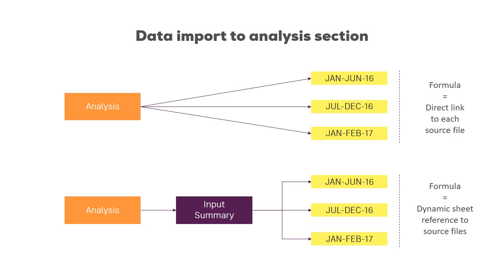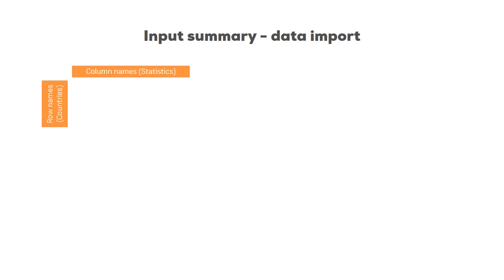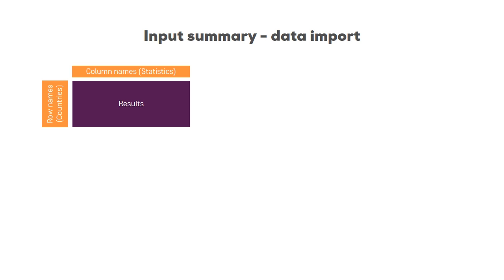Now let's look at how to build the input summary sheet. First we need the row names — the countries — which is more complex because we have three periods and need all countries without duplicates. Then we define column names, which is easier since all three CSV files share the same column names. We'll then create a dynamic formula to retrieve results based on a country name and a statistic.